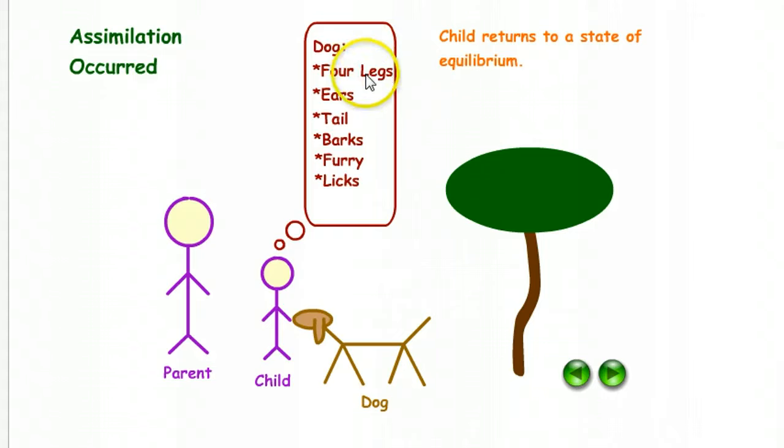So to the characteristics of four legs, ears, and tail, the child adds barks, furry, and licks. And so assimilation has occurred and the child has returned to a state of equilibrium.